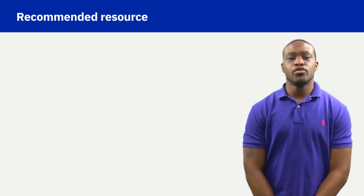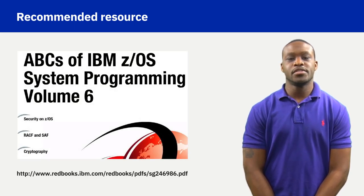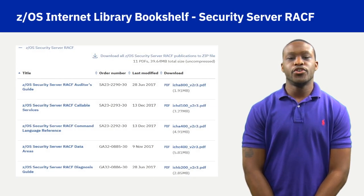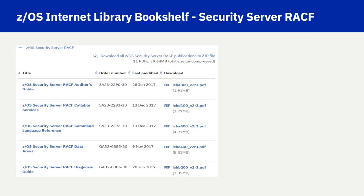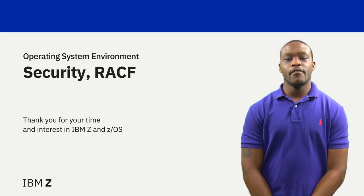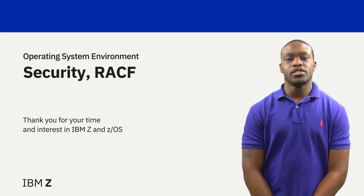To advance your RACF knowledge and skill level, IBM Redbook ABCs of System Programming Volume 6 is a great place to start. A security server bookshelf is also available in the ZOS Internet Library for further information. In summary, you are better able to describe the RACF authentication process, describe the SAF role in the authentication process, and find additional resources to advance your RACF knowledge and skill level.